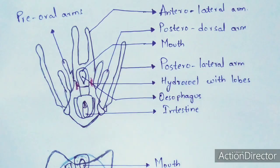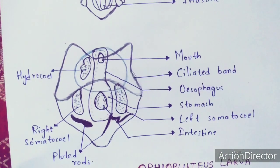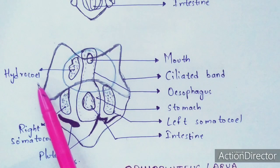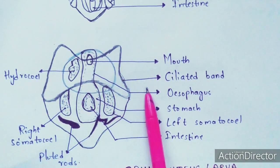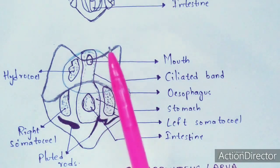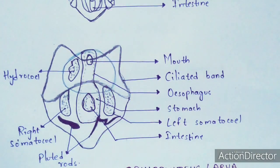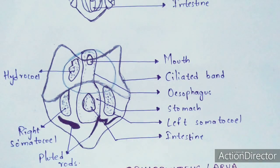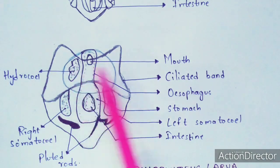The ciliated band is undivided. Looking at the diagram carefully, the total outer boundary is not the ciliated band — the ciliated band itself is undivided. You can see the mouth region, esophagus, stomach, left somatocoel, intestine, fluted rods, right somatocoel, and the hydrocoel with lobes shown in red.